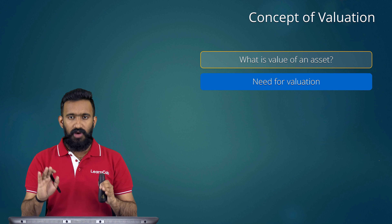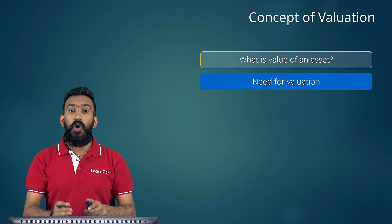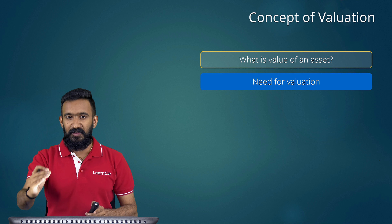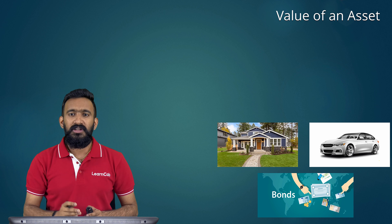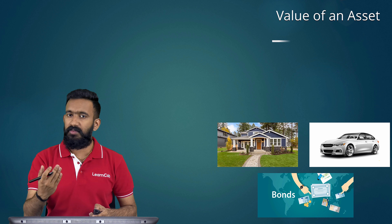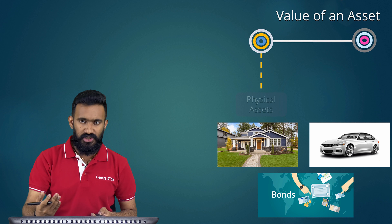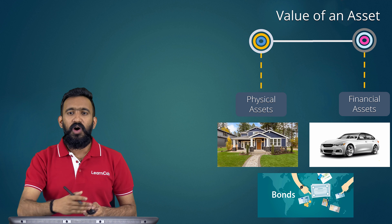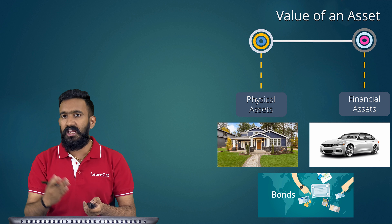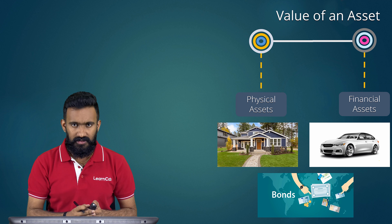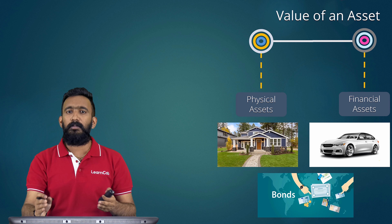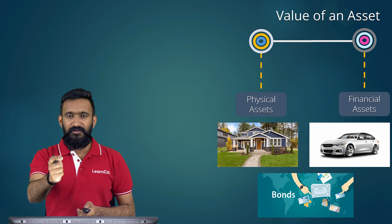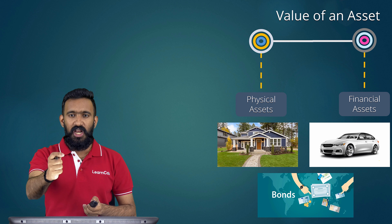The value, or real value, is nothing but the present value of the future returns that a particular asset is going to give you. This is the fundamental of all valuation. An asset could be anything — a physical asset or a financial asset. A physical asset could be a house or a car; a financial asset could be a share, a security, a bond, a mutual fund, whatever it is. For all these assets, the basic concept remains the same: whatever you pay for a particular asset is the present value of its future returns.